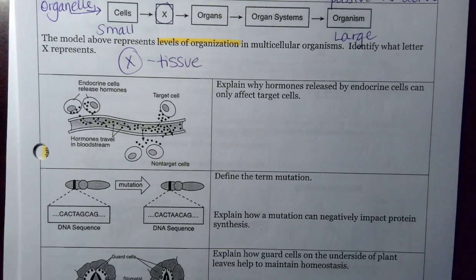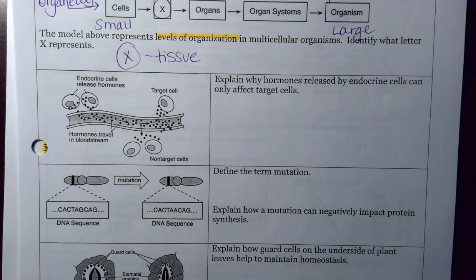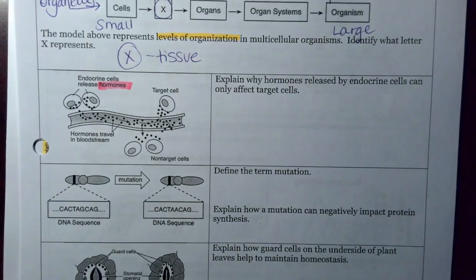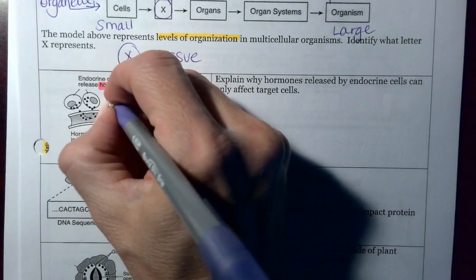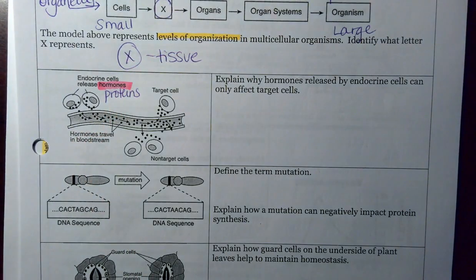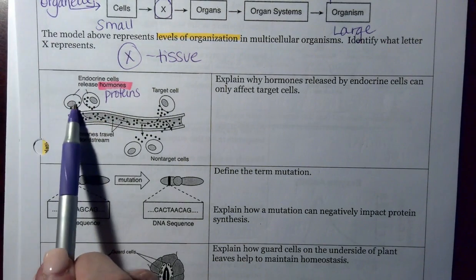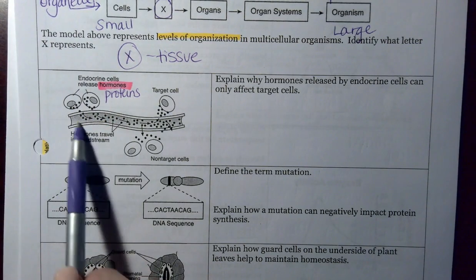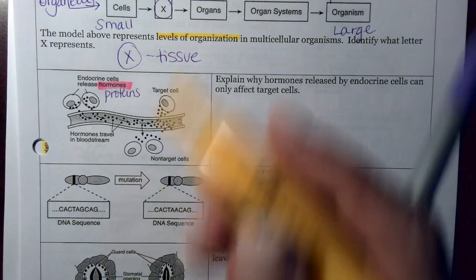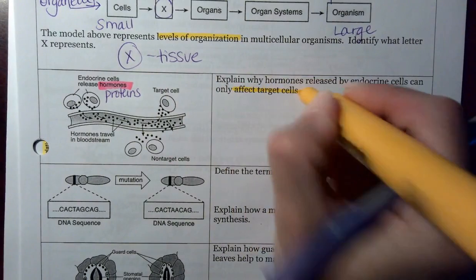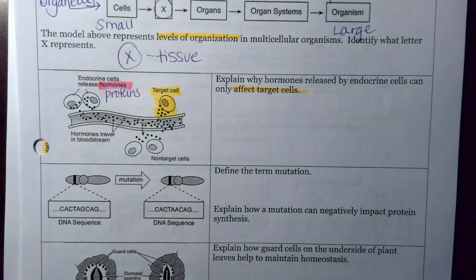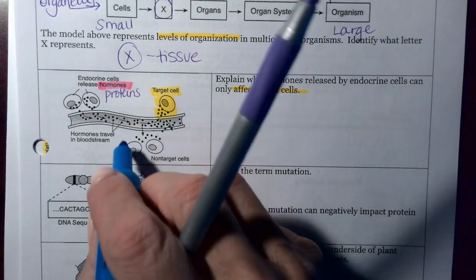Looking at some human body questions. Over here, we have hormones. Things we want to remember about hormones are that hormones are proteins. Therefore, they have a specific shape. Note, hormones get released into your bloodstream, and then they only affect certain cells. Right here, I have a target cell. It can affect a target cell, but over here, these non-target cells, it just doesn't work on.